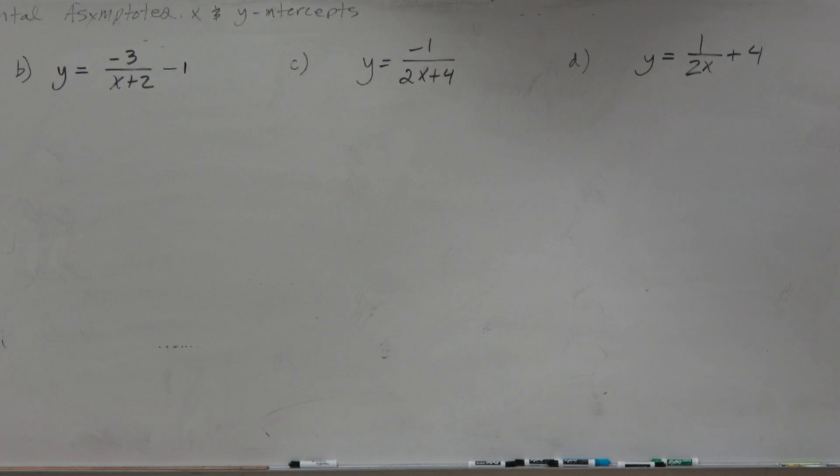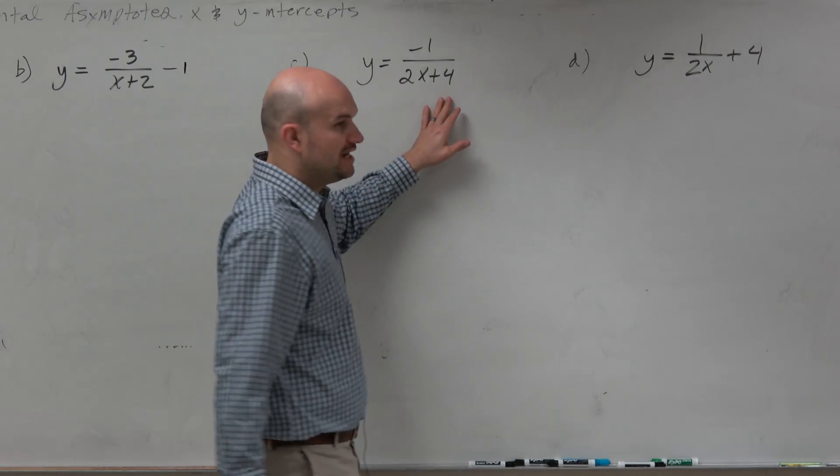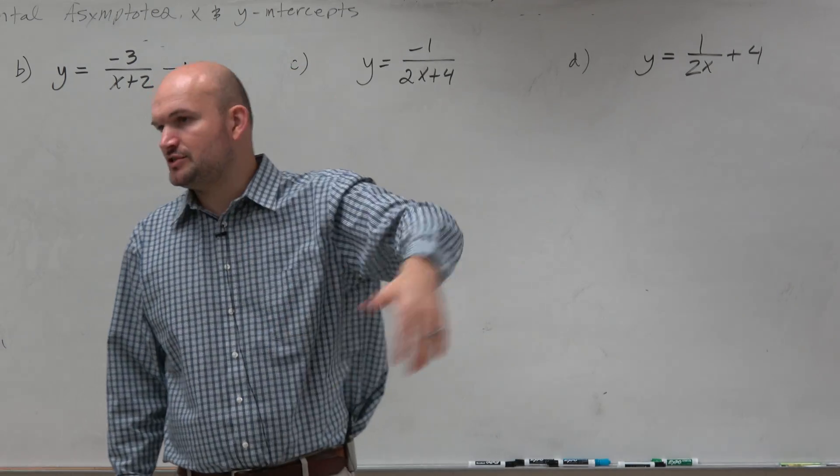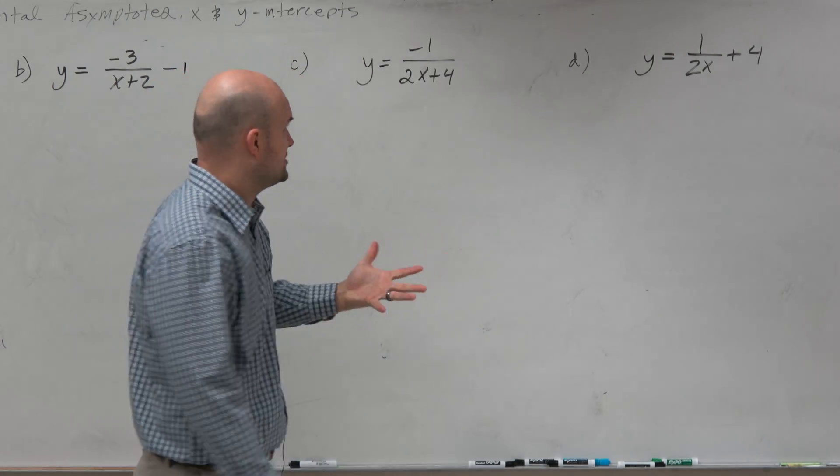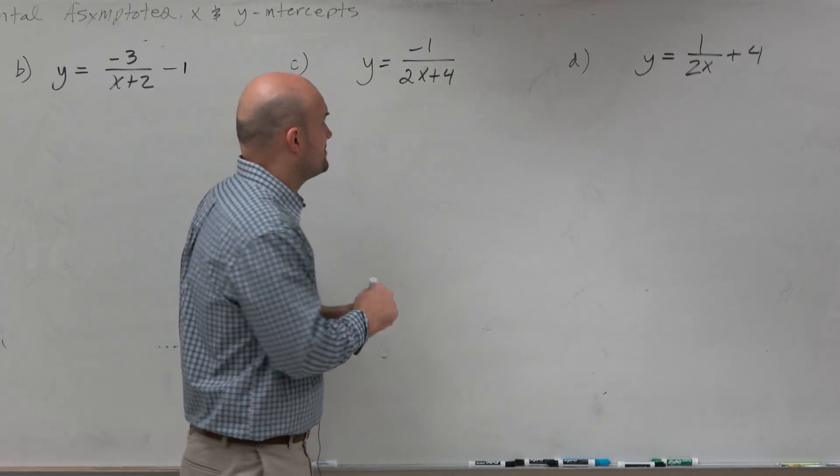Now, when identifying the asymptotes, it might be helpful for us to just kind of remember what the transformations are, just to do a quick little review of the transformations. This isn't what I asked you to do, this isn't part of the problem, but I think it's just good to go back to chapter one.